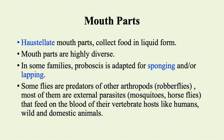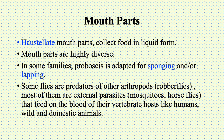Dipterans have haustellate type of mouth parts. Haustellate means a haustellum is present in their mouth parts, which is meant for sucking and absorbing food. These dipterans mainly collect food in liquid form.